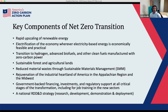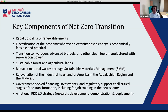The key components of a net zero transition — applicable to all sectors — include a rapid upscaling of renewable energy, electrification of the economy wherever economically feasible, and where it's not, a transition to hydrogen, advanced biofuels, and other clean fuels manufactured with zero-carbon power. A key element will be sustainable forest and agricultural lands, a transformation of practices there, and reducing material waste to move more towards a circular economy.